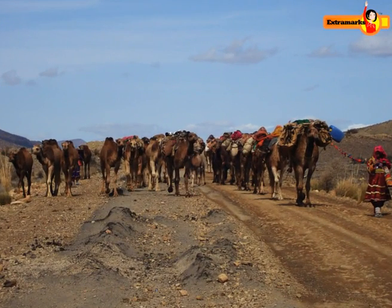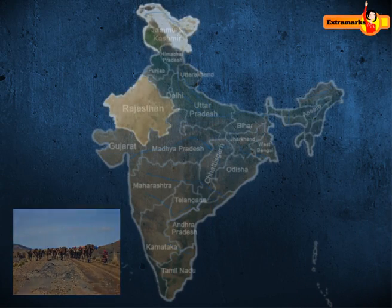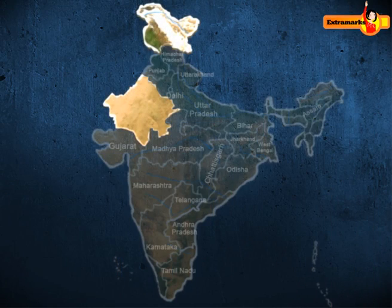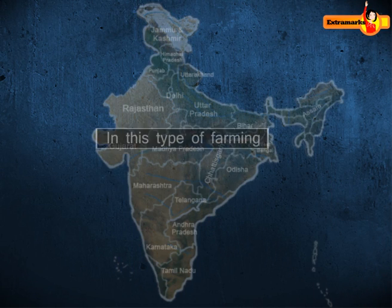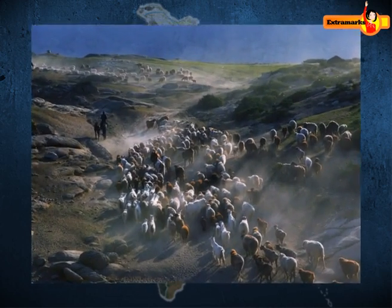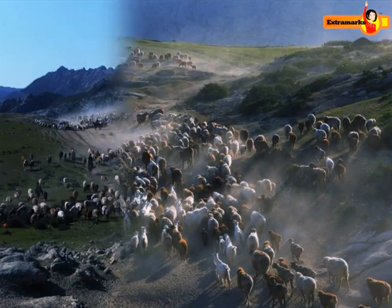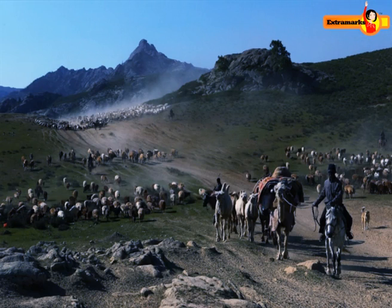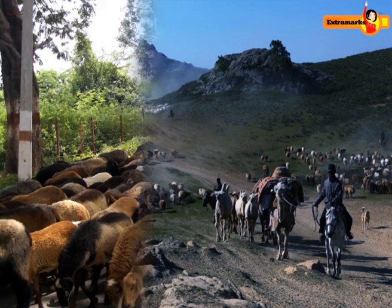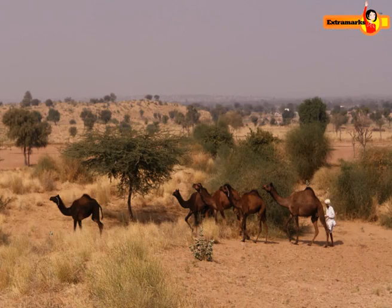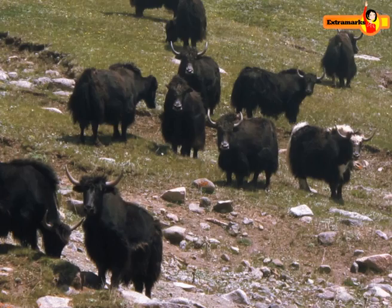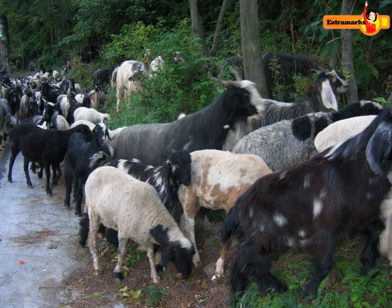Nomadic herding is practiced in some parts of India, like Rajasthan and Jammu and Kashmir. In this type of farming, herdsmen move from place to place with their animals for fodder and water, along defined routes. This type of movement arises in response to climatic constraints and terrain. Sheep, camel, yak, and goats are most commonly reared.